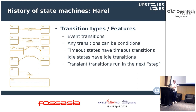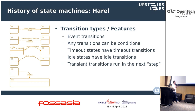We can add conditions to transitions — any transition can have a function that says if it returns false, don't take this transition. We have event transitions, which is what we've been talking about. We also have automated kinds of events like timeout states: the system stays for one second in this state and then continues. In an event-based program there are idle states — when the event loop becomes idle we can have an idle transition. There are also transient transitions, which are followed even without any events occurring.